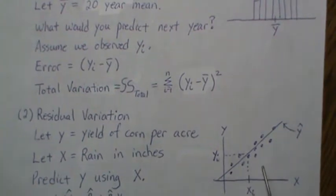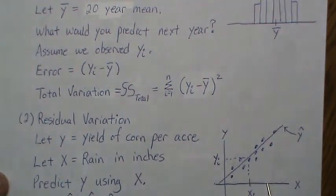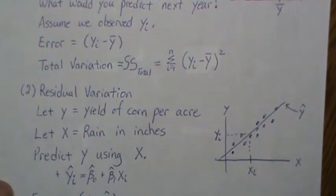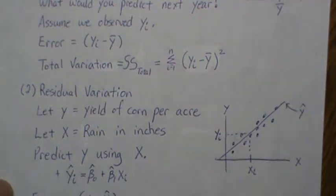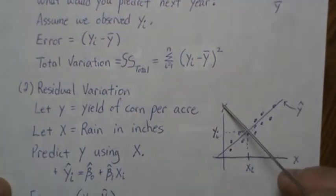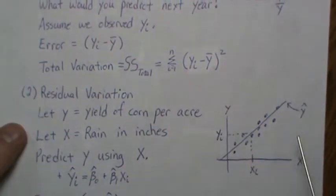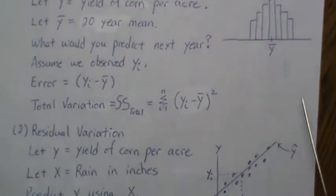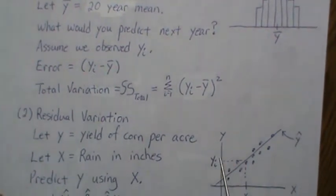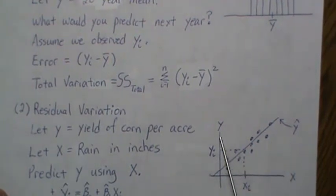How would we predict Y using X? If the rain for a given year is at some value, we would predict the corresponding corn yield using the regression line — that's a smart guess. We use the regression line to predict how much corn we'll grow based on the rain. Notice I tried to use the same Y values: if we push those Y's down, that's what a scatter plot represents when we're using X to predict Y.